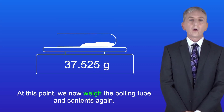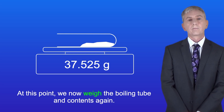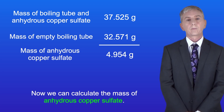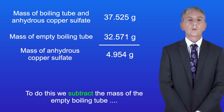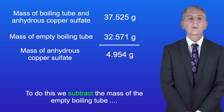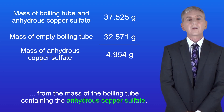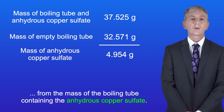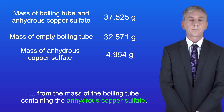At this point we now weigh the boiling tube and contents again. We can then calculate the mass of anhydrous copper sulfate by subtracting the mass of the empty boiling tube from the mass of the boiling tube containing the anhydrous copper sulfate.